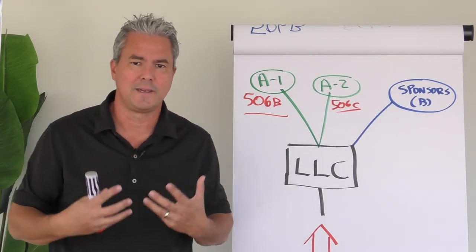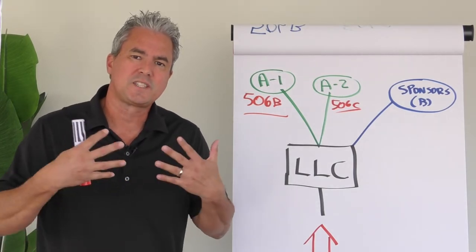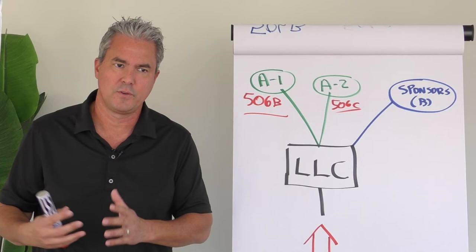You don't want to start co-mingling. So anyway, that's one of the main recommendations we have for our clients is make sure we split up the classes so that it's very clear which one's the 506B, 506C.